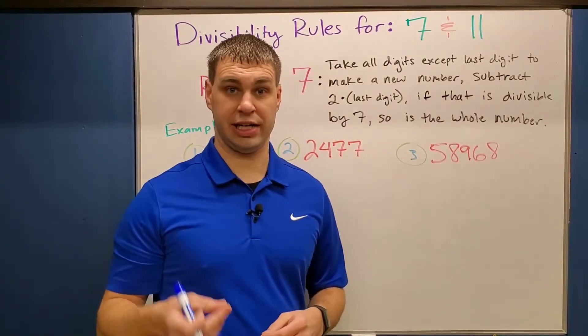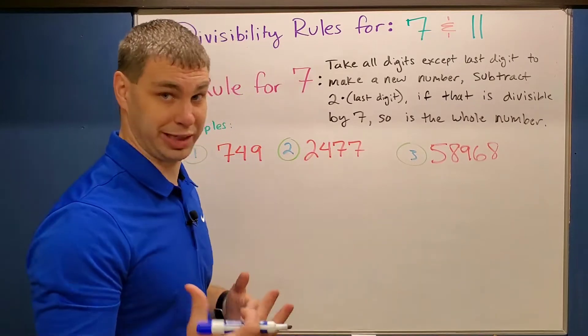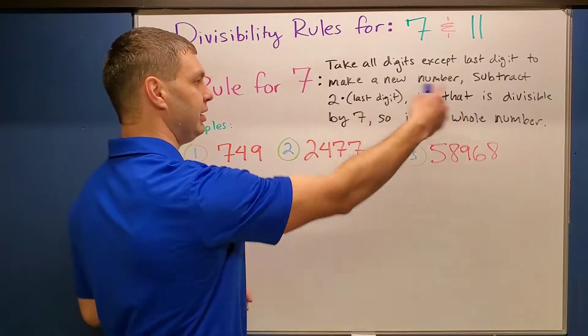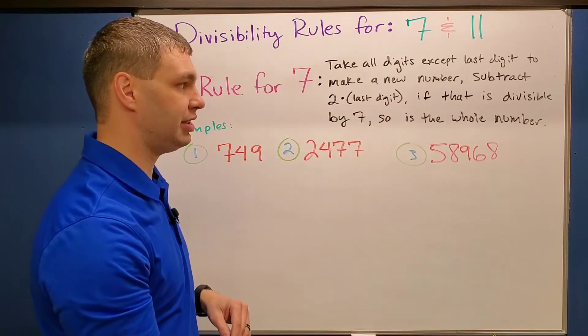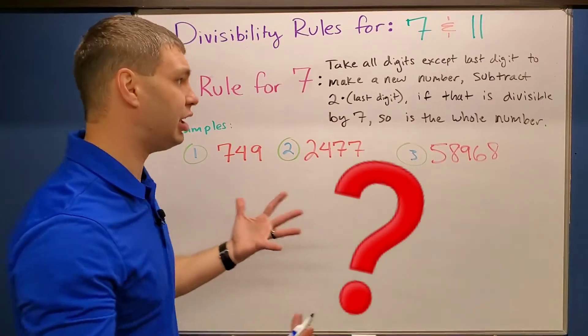The reason why I made a separate divisibility check for 7 and 11 in this video, not put in my other videos, is because their rules are super weird. Check it out. It says take all the digits except the last digit to make a new number. Subtract 2 times that last digit, and if then that is divisible by 7, then so is the whole thing. What is that talking about?